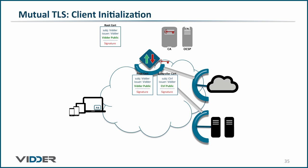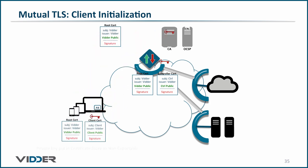Finally, we need to initialize the client. In this case, the controller will make a certificate signing request on behalf of the client, such that the CA will generate the keys and the certificate and put them in an encrypted P12 file, so they can be transported secretly to the client. The client unwraps them and stores the private key in the certificate store as non-exportable and non-viewable.